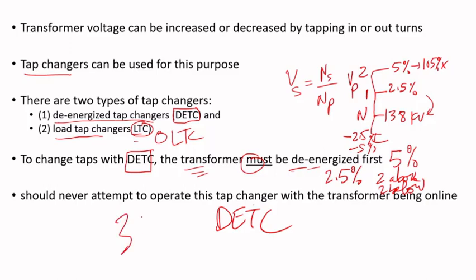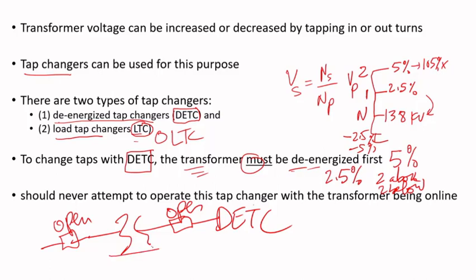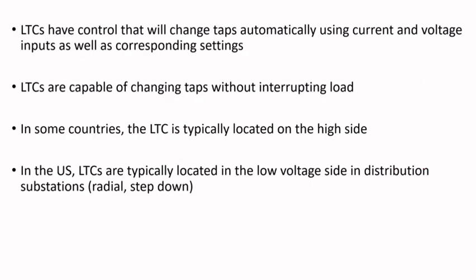If you have the transformer with a breaker, step one is to isolate the transformer — open it such that there is no current flow. To keep it simple: current is zero, nothing is going through the transformer, and voltage is zero on either side. The transformer is completely out of the circuit, out of service.